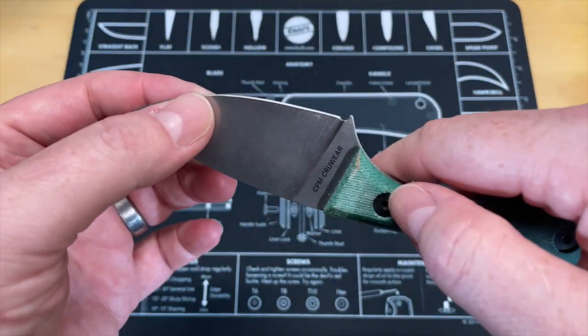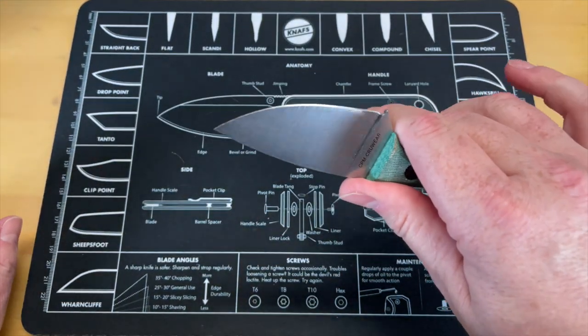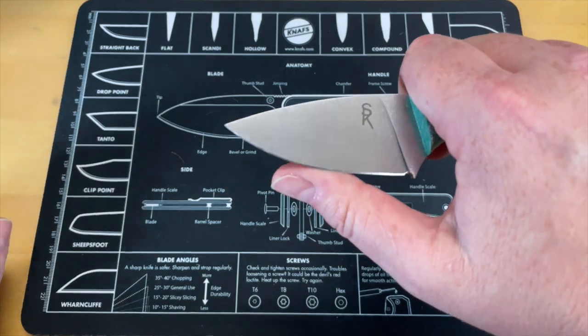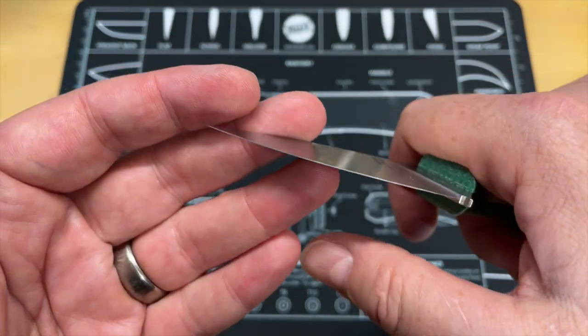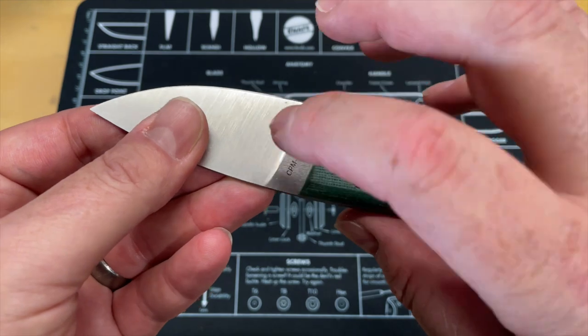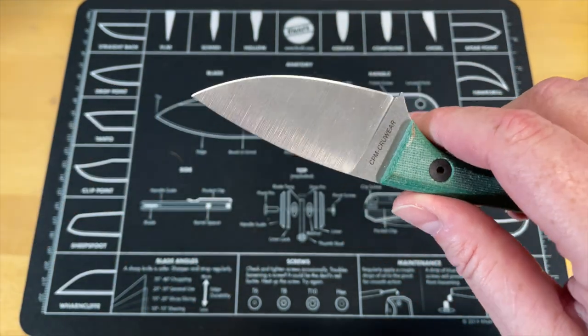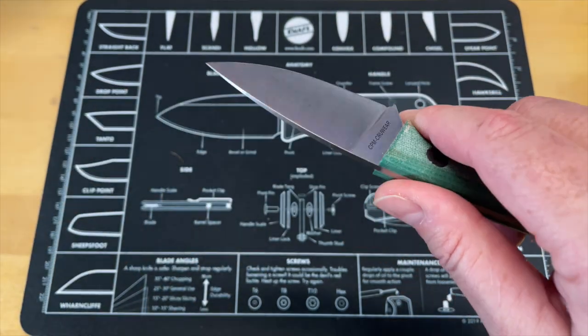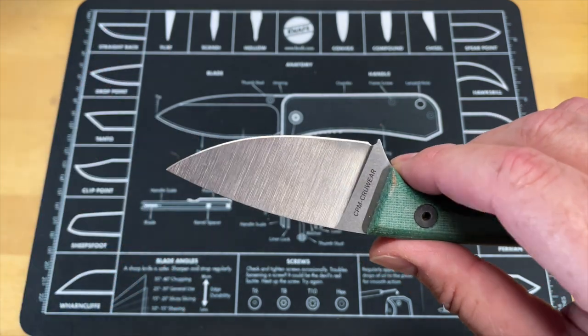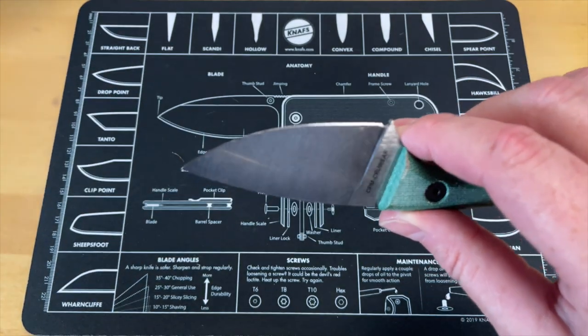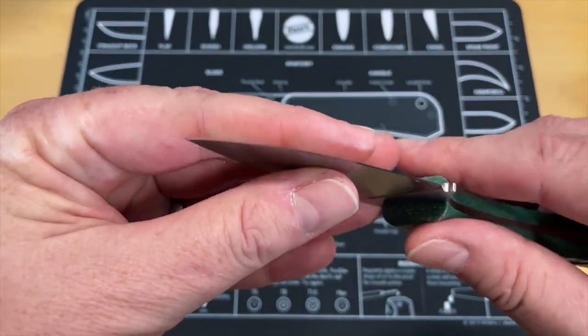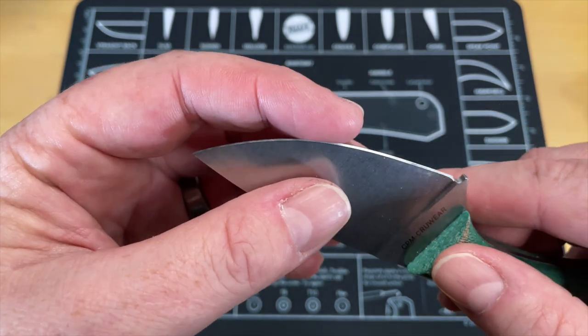What that allows that to do is even when this knife gets dull, it still cuts. But the thing is, I told Alex he ran this CPM Cruwear I think he said 65, 66, which is pretty hard. And I have yet to have this get dull. So this is the edge it came with when Murky Ocean sent it to me and it's nutballs sharp still.